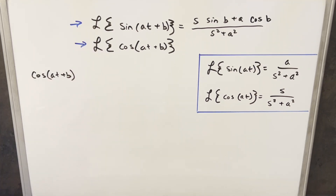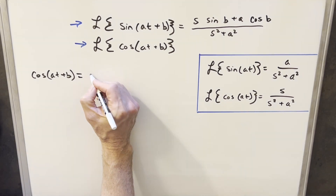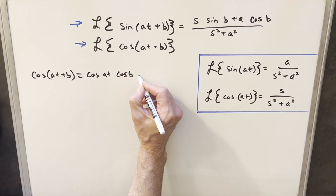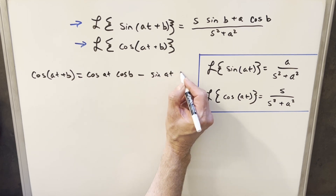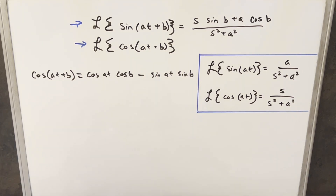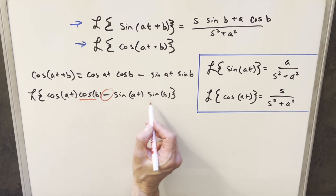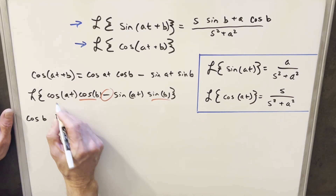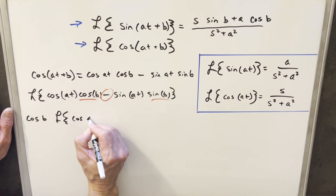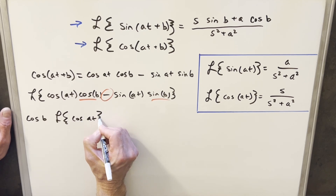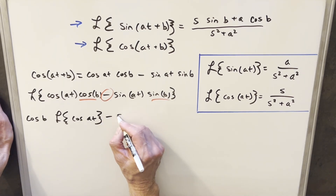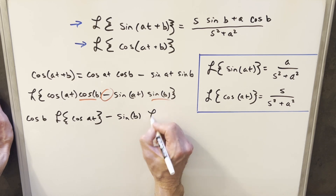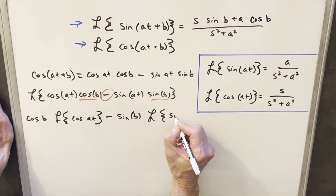Next we'll do almost the exact same thing for the Laplace transform of cosine at plus b. We'll use the angle sum formula, so this becomes cosine at times cosine b minus sine at times sine of b. We plug this into the Laplace transform, split on the minus sign, and bring out our constants using the same properties. Rewriting, we'll have cosine b in front giving Laplace of cosine at, minus sine b giving the Laplace of sine at.